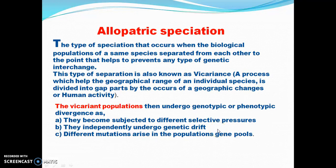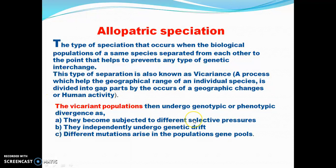This is the type of speciation that occurs when a biological population of the same species is separated to the point that prevents any genetic interchange. This separation is also known as vicariance — a process by which the geographical range of individual species is divided into separate parts by geographical changes or human activity. The vicariant populations then undergo genotypic as well as phenotypic divergence as they become subjected to different selective pressures, independently undergo genetic drift, and different mutations arise in the population gene pool.